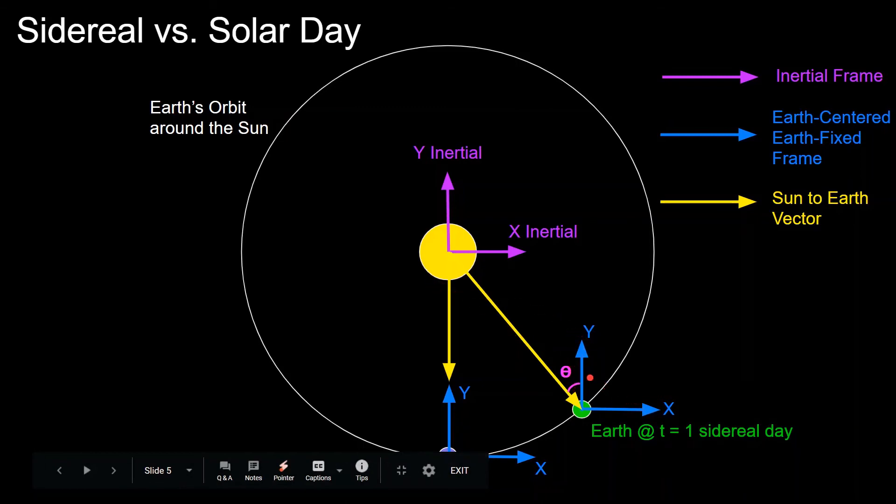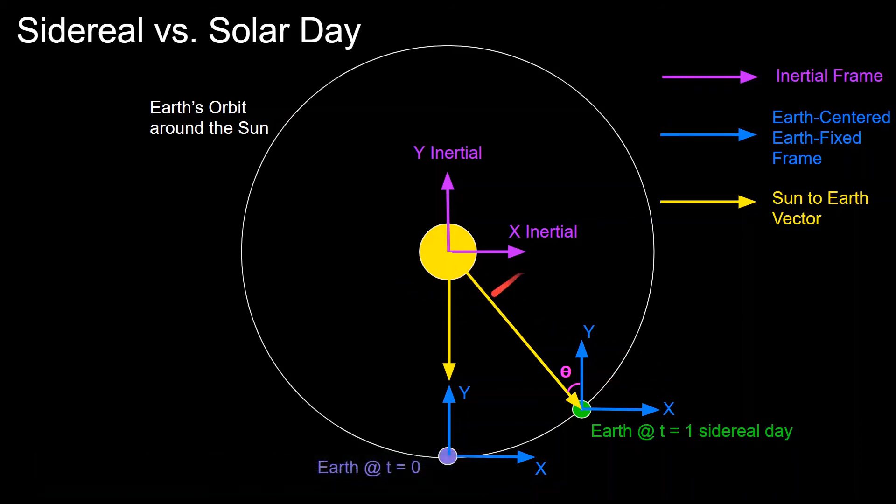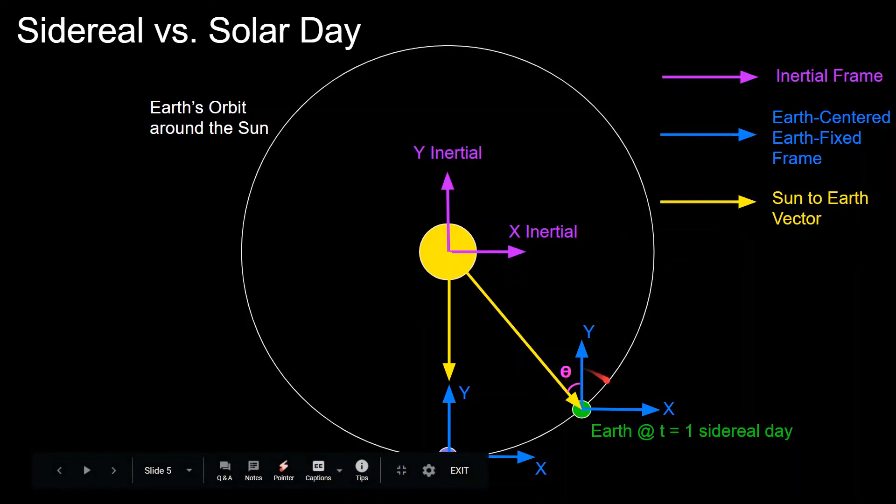Now, in reality, this is roughly about one degree. I just wanted to make it bigger to be able to show it in the diagram. But this rotation represents roughly four minutes longer, so a solar day is roughly four minutes longer than a sidereal day, because it has to make up this extra little rotation.